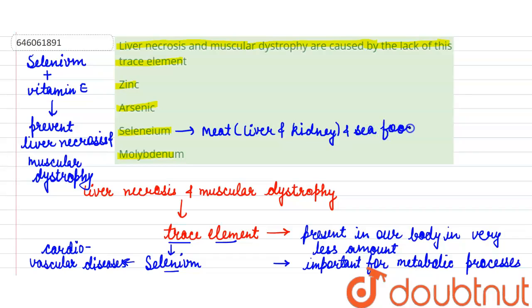So if we discuss the options, first option is zinc which is incorrect, second option is arsenic which is also incorrect, and the last option is molybdenum which is also wrong with respect to liver necrosis and muscular dystrophy. So the answer of this question will be C, that is selenium. Thank you students.